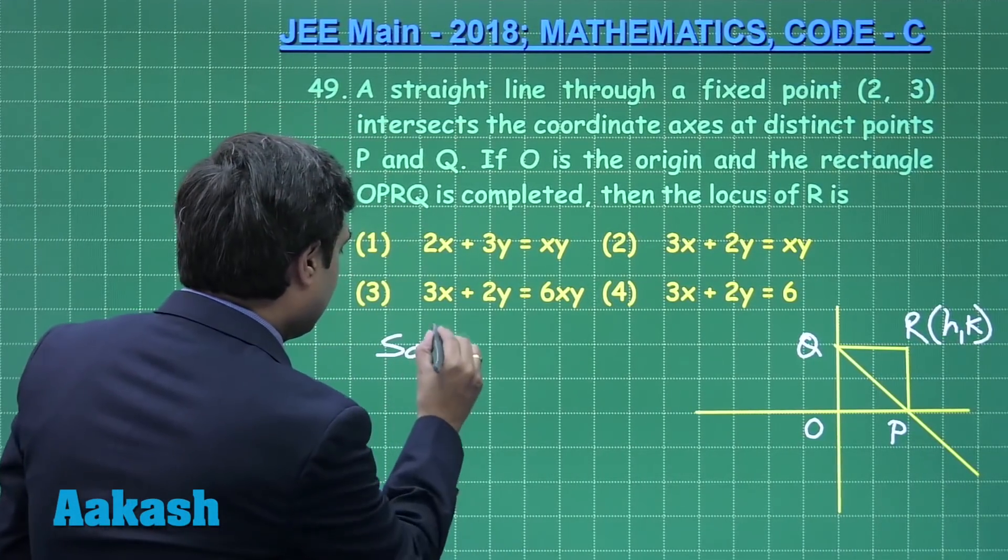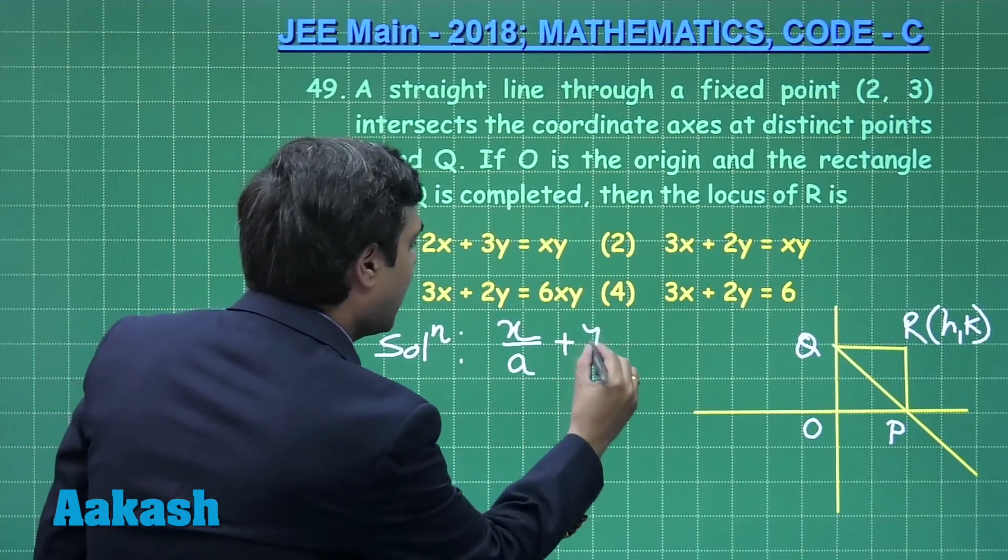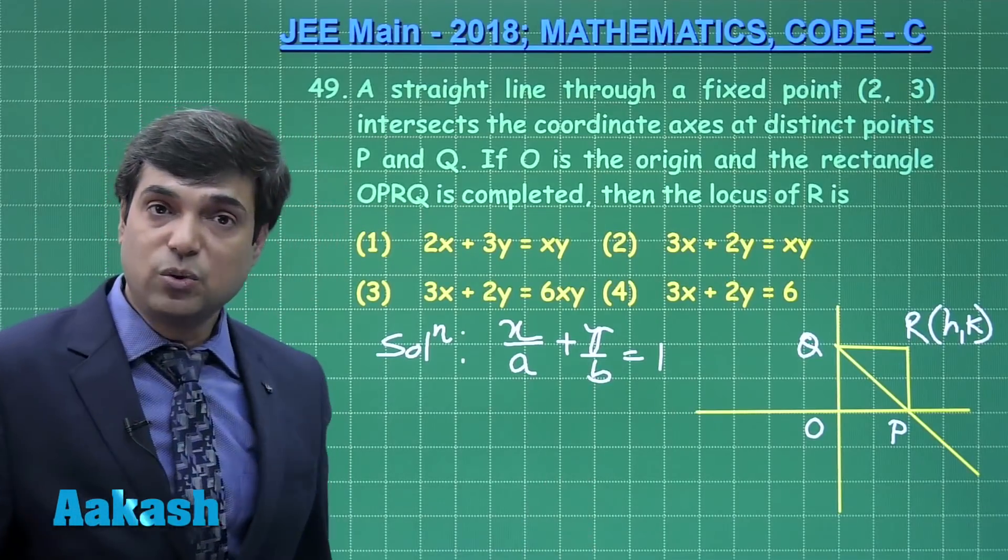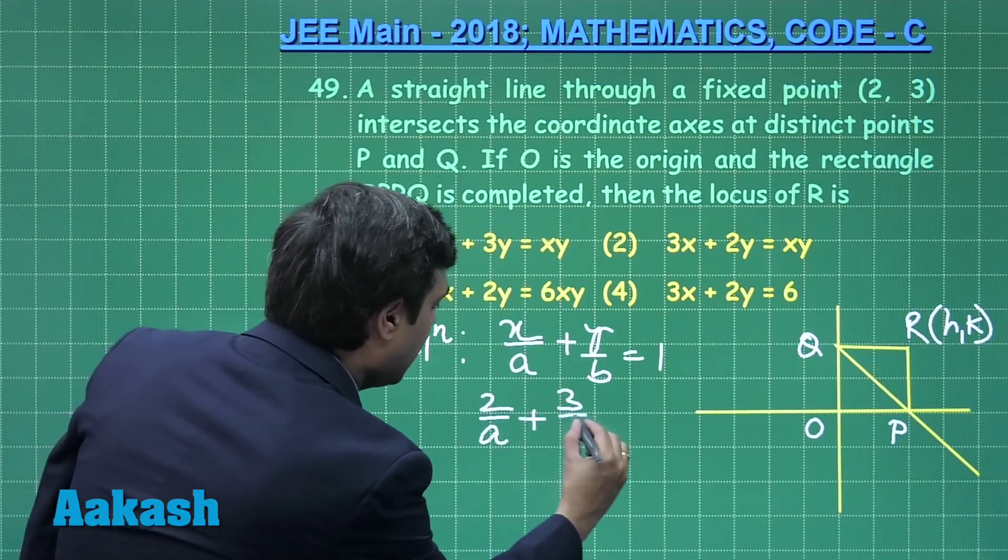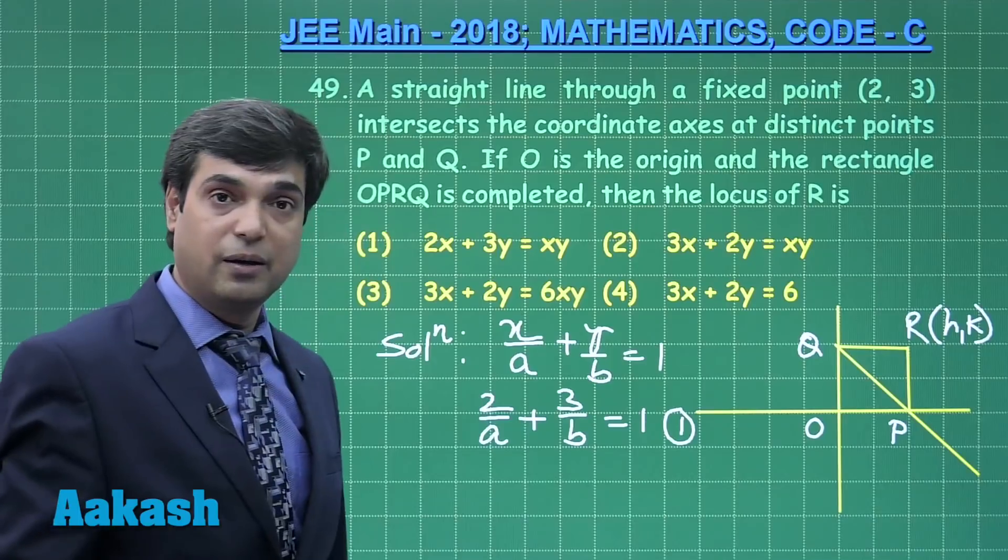Starting, let the line be x/a + y/b = 1. It is passing through the point (2, 3), meaning that 2/a + 3/b = 1. Let us consider this equation number 1.